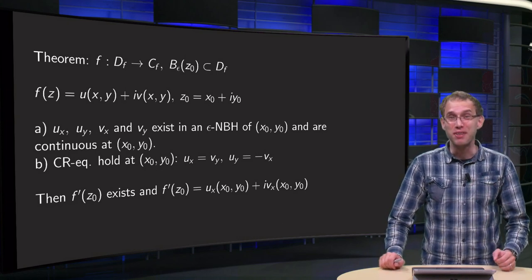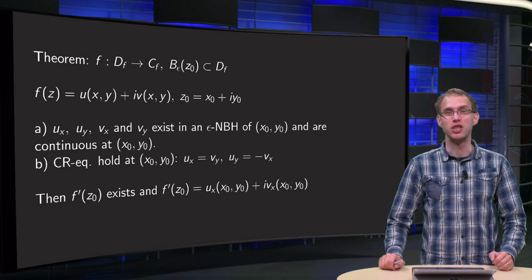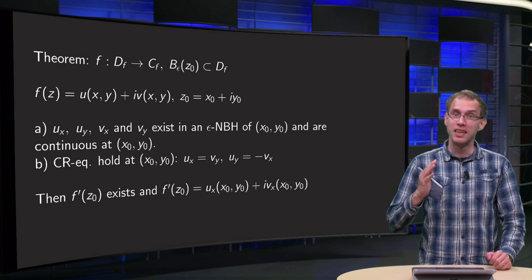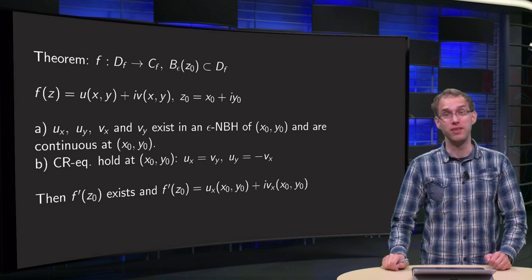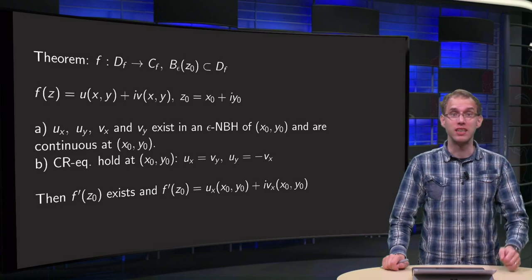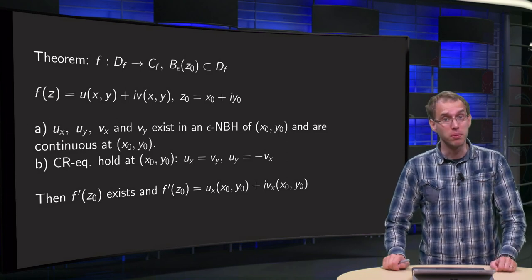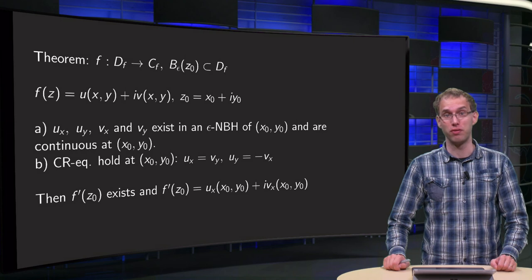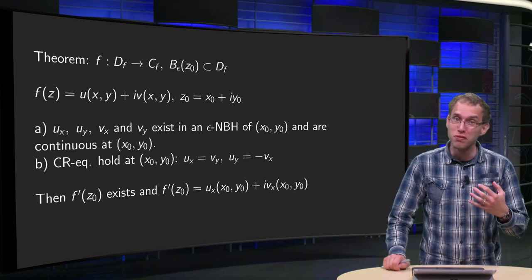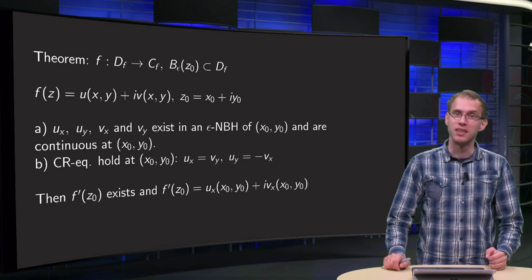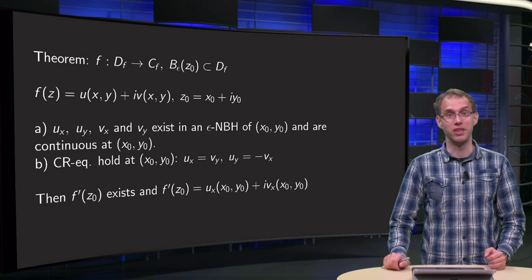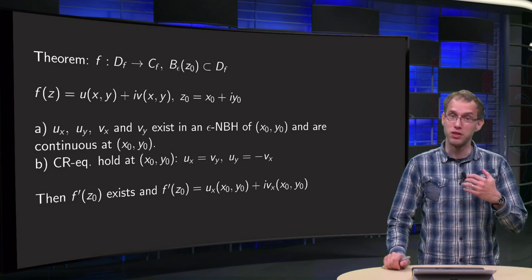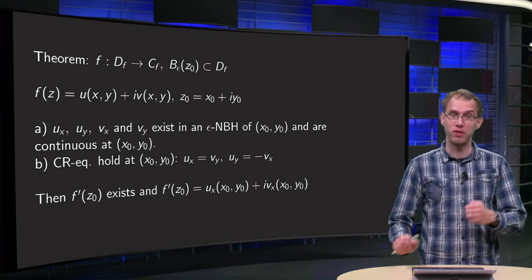We have seen that differentiability is a strong property for complex functions. Differentiability of u and v is not enough. We have already seen that the Cauchy-Riemann equations are a necessary condition for differentiability, but what is a sufficient condition? That's what you will learn in this theorem, and you will also see its proof in this video.